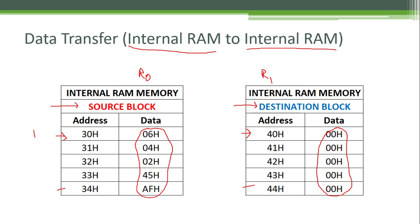We have to initialize pointer r0 to the starting address of the source block, which is 30H, and initialize pointer r1 to the destination block, which has a starting address of 40H. After that, we copy the first byte from the source address to the accumulator, and from the accumulator copy it to the destination address pointed by r1, which is 40H. Then we increment both pointers so r0 points to 31H and r1 points to 41H.